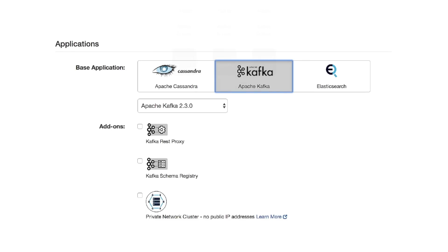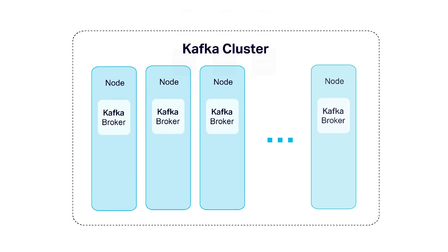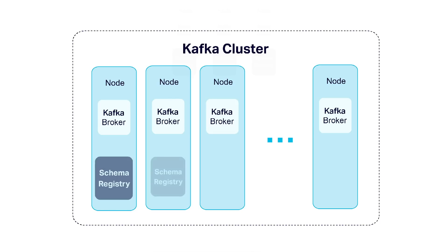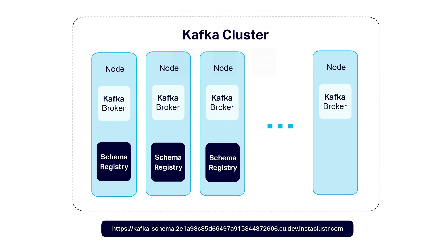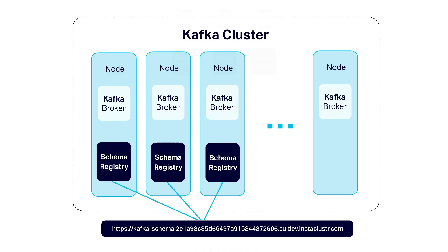With an Instacluster managed Apache Kafka cluster, you can deploy the schema registry as an add-on to your cluster. This is a tool that will help you to ensure that all of your Kafka messages are created and consumed using known formats. When you provision a cluster with a schema registry, regardless of the size of your Kafka cluster, you'll get three schema registry nodes and one DNS name that will point to all three of the nodes. The schema registry nodes will be automatically set up to store their schema information in your managed cluster. So all you need to do to begin using your schema registry is configure your Kafka producers and consumers to point to the newly created DNS name.